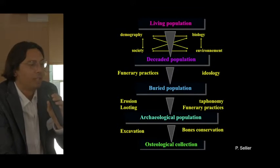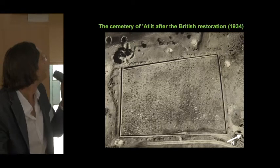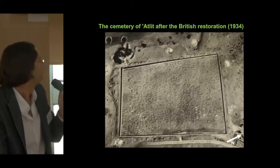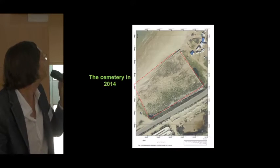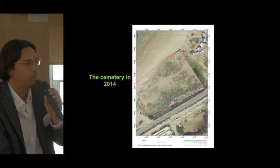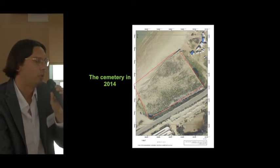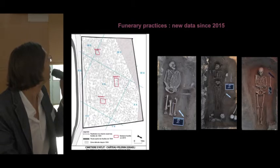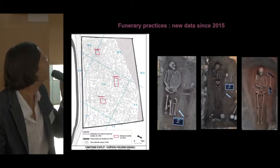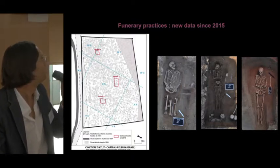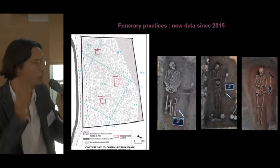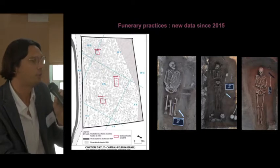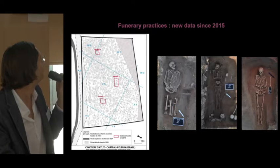We used this type of analysis for the Athlit cemetery. This is the cemetery of Athlit at the end of the excavation by Jones — it's a very important and well-preserved cemetery. We did a survey of the cemetery in 2014, and on the surface we saw a lot of differences in the surface markers. When we excavated, we had good data about the position of the bodies in the graves. The majority of the bodies were on their backs, with the head in the direction of the castle or the town.